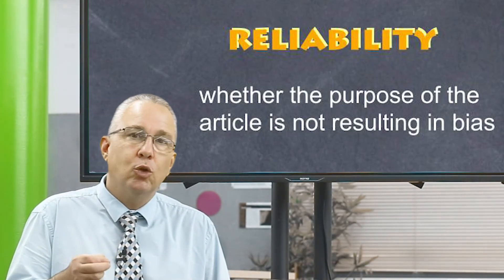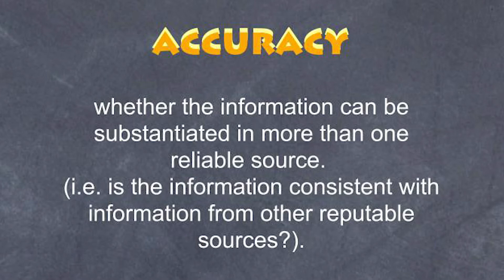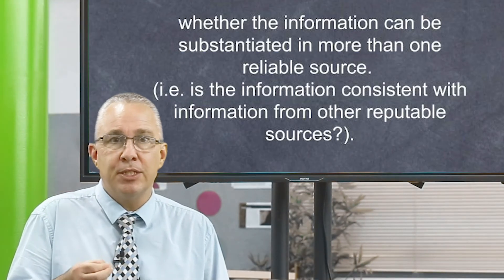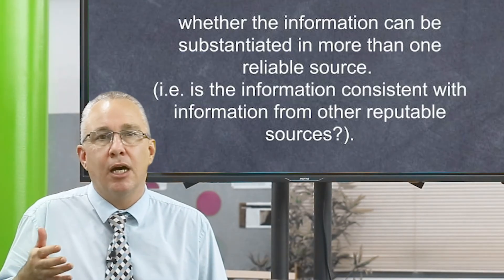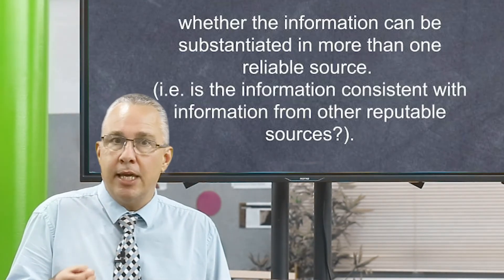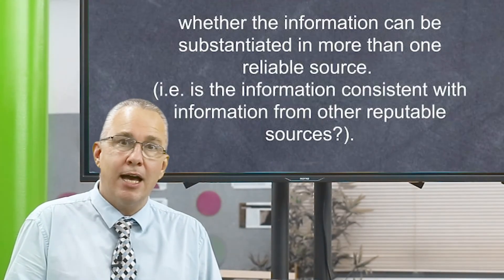Finally, we need to look at accuracy. Accuracy simply means: do you have information from multiple reliable sources that say generally the same thing? In essence, there is an agreement among those sources. Only then can you say the information you have is accurate. If you only have one source, no matter how reliable or valid you consider it, it's not accurate until you have multiple sources that back up the statements in your first article.